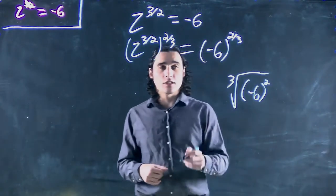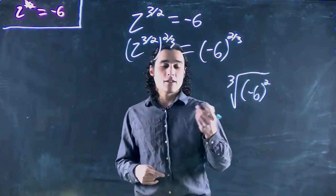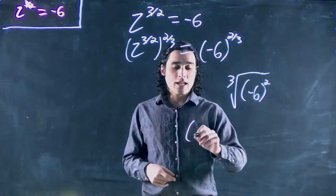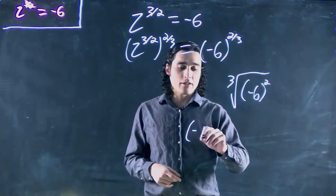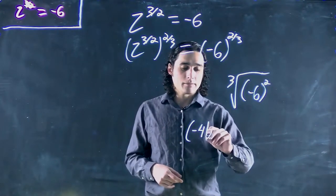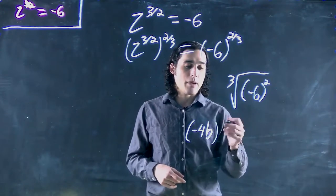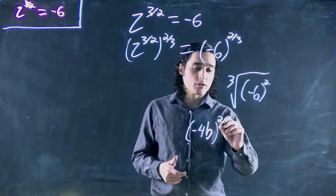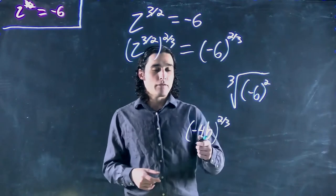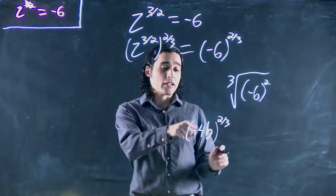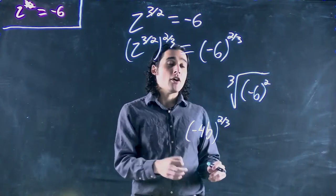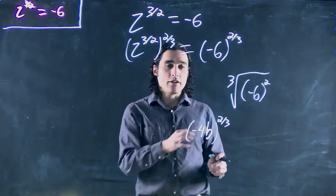It's also really important to note that we talked about the idea of taking something. If I had say negative 4b that was to the power of, well, let's keep using 2 over 3. Before we said you could split it up. This doesn't work if the numbers in there are negative or if they're unknown.